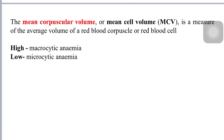Mean Corpuscular Volume (MCV), or mean cell volume, is a measure of the average volume of a red blood corpuscle or red blood cell. If its value is high — meaning MCV is high — it causes macrocytosis. In the condition of microcytosis, MCV is low.